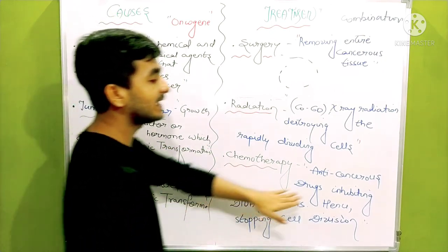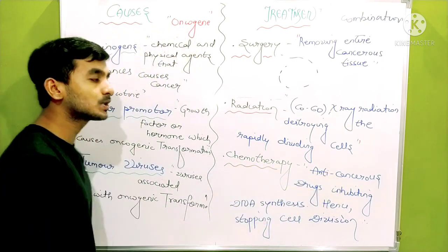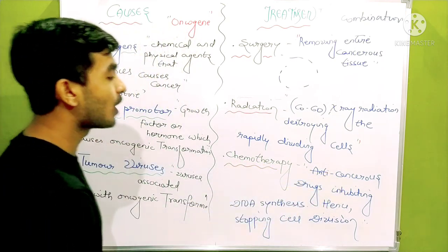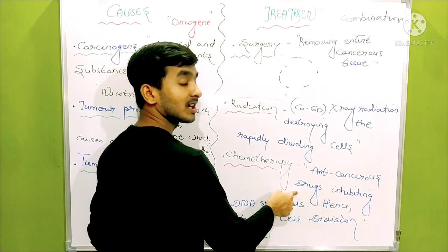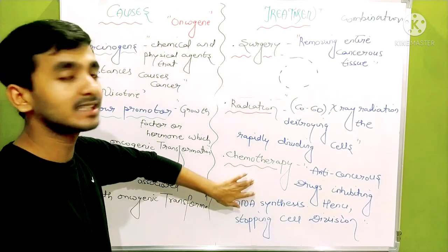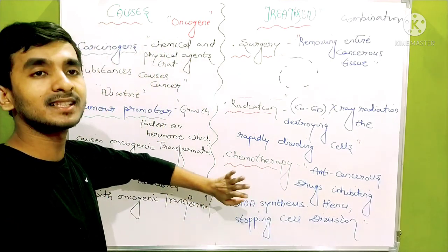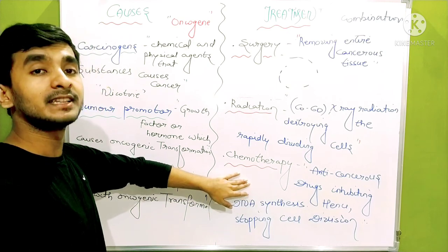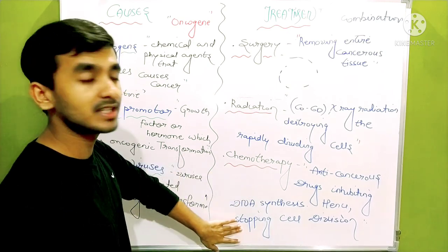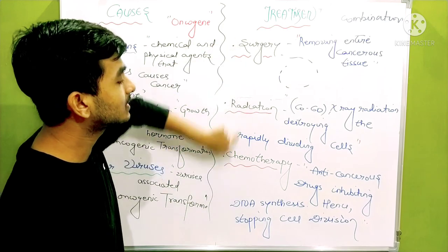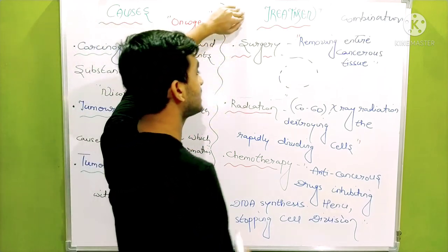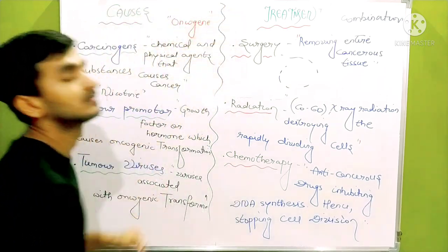Then last thing is chemotherapy. Chemotherapy is the use of anti-cancerous drugs - the drugs which can inhibit the cancer. What happens when we use anti-cancerous drugs? They generally inhibit the DNA synthesis and if the DNA synthesis is inhibited or prohibited, the cell division will get stopped. So the cell division stops. These are the three processes that are used in combination to prevent cancer. Thank you.